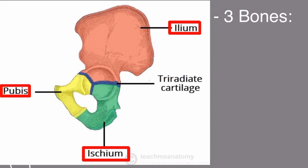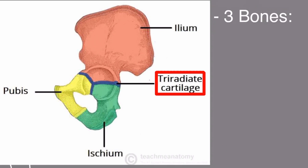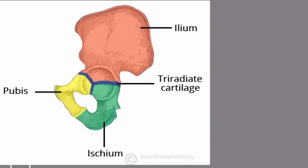At birth, these three components are separated by a hyaline cartilage called the tri-radiate cartilage. This tri-radiate cartilage is Y-shaped and is joined in the acetabulum of the hip bone. By the end of puberty, the three regions will have fused together, and by the age of 25, they will have ossified.